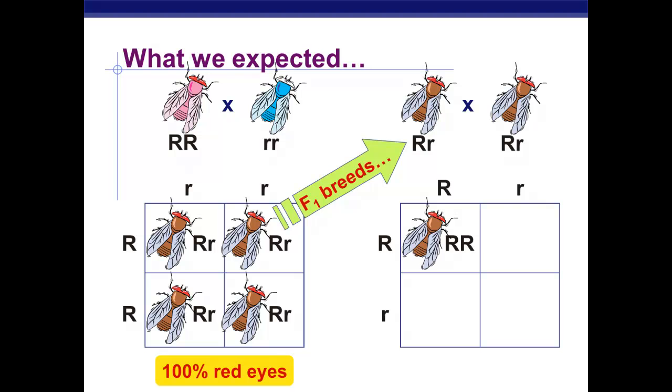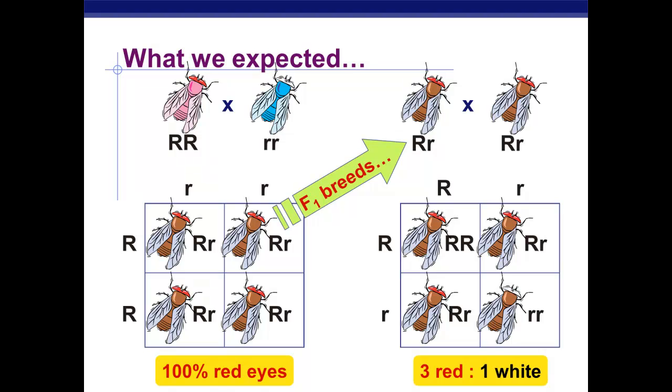we'd end up with that classic relationship where we'd have 3 to 1. We'd have our homozygous dominant, our two heterozygous, and one homozygous recessive white-eyed fly. And, of course, sex wouldn't matter. But that's not what happened.